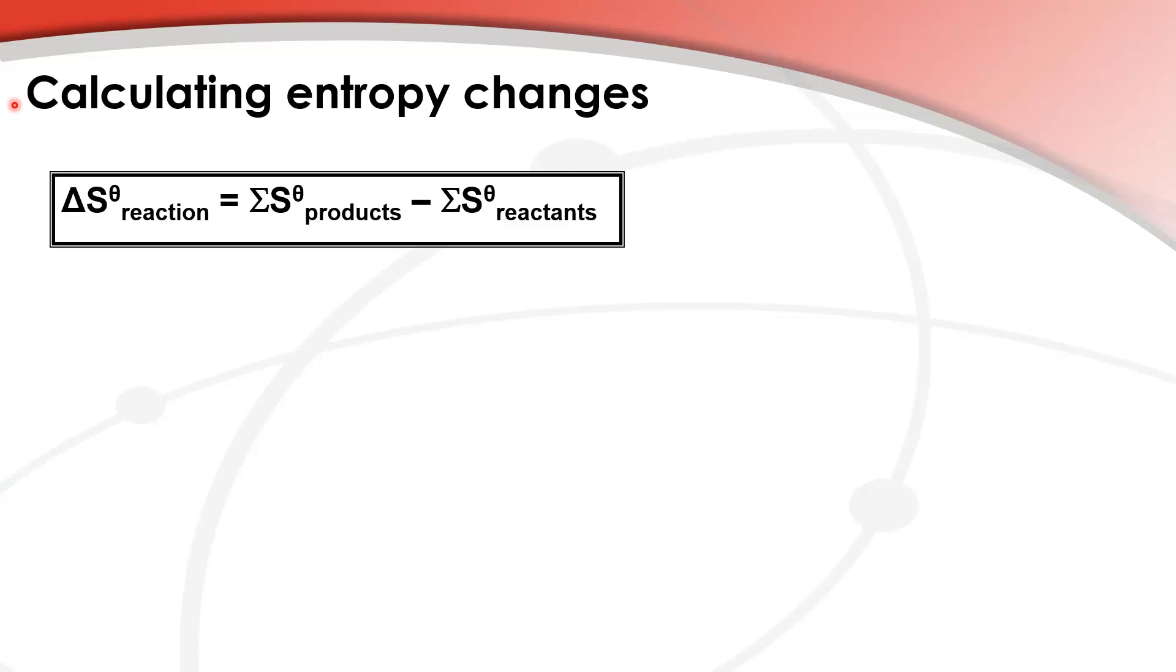Calculating entropy changes. We can use this equation here to calculate the entropy change in a chemical reaction. So it's change in entropy equals the sum of the absolute entropy of the products minus the sum of the absolute entropy of the reactants.